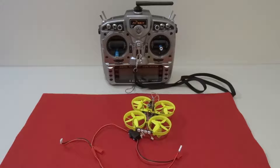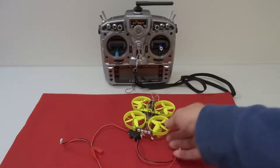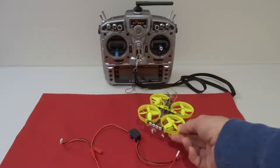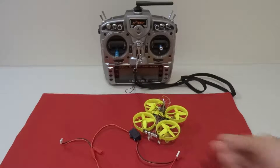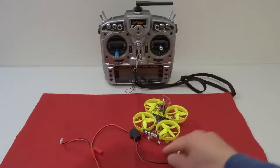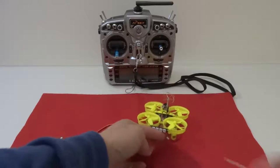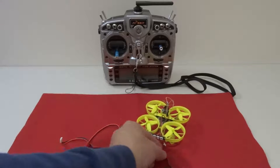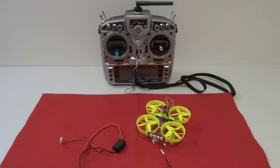As you know, to bind a FrSky receiver in the QX70 is a bit hard because you have to press the bind button while at the same time connecting the battery. That's a pretty hard process to get used to.